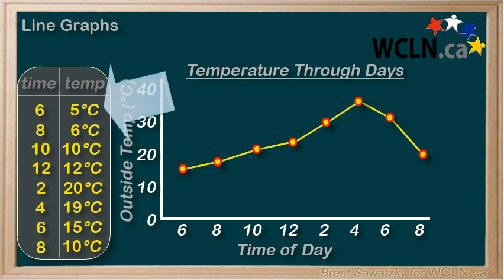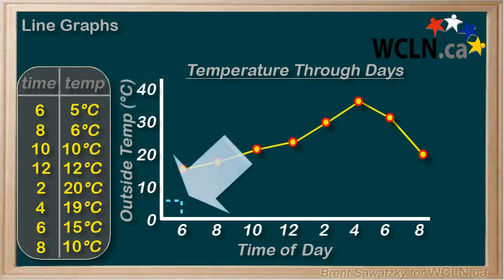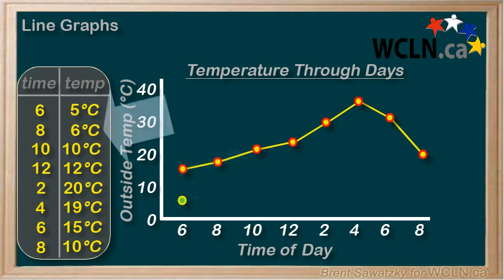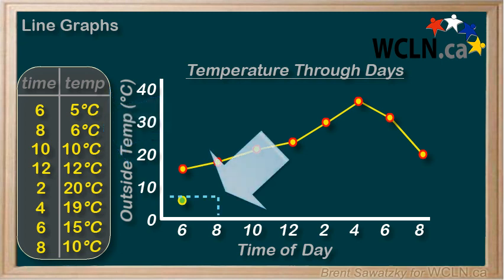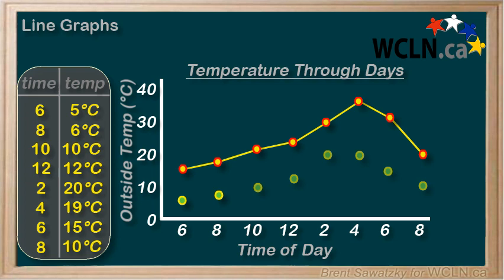When the time is 6 a.m., we see that the temperature is 5 degrees, so we intersect here and here, and we put our dot. In the same way, we plot the remaining dots on the graph. It is to be a line graph, so our next step would be to join our dots with lines.